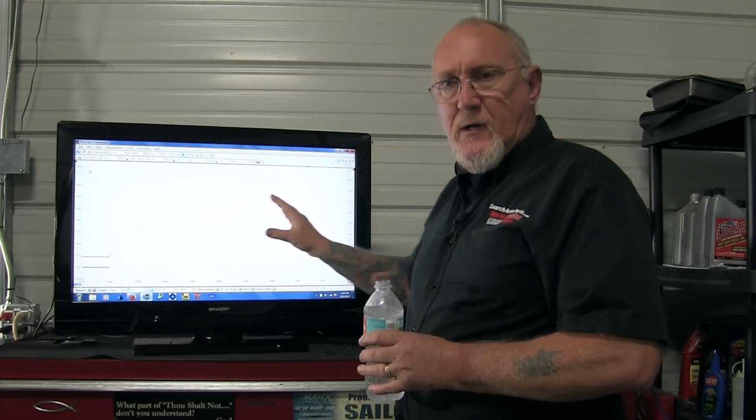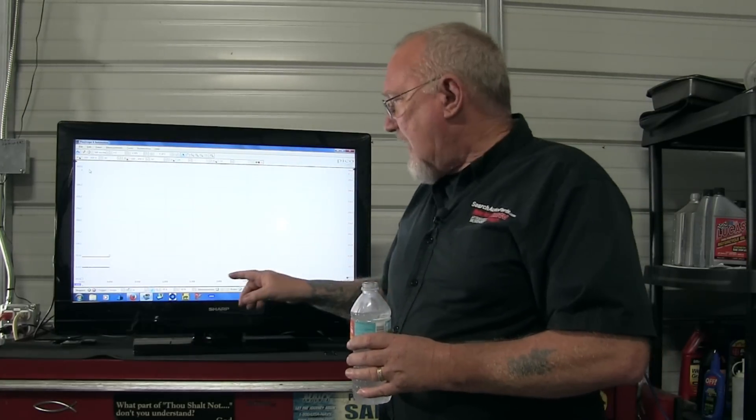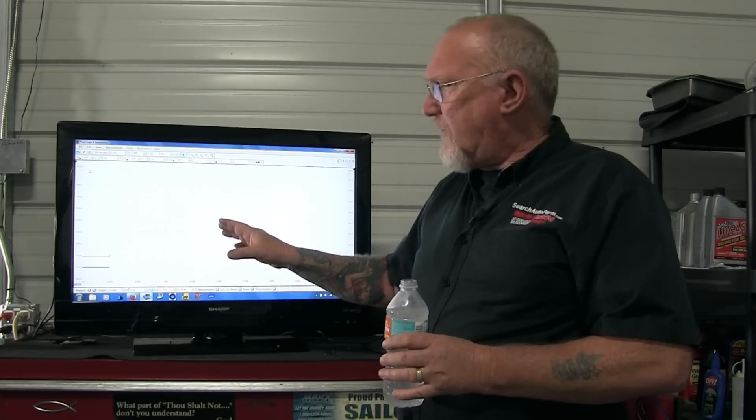It's at 70 amps on a rising slope. So that's telling the scope, don't start drawing a pattern until you see that signal go from below and up to that 70 amp threshold. And once you see that, Mr. Pico, I want you to start drawing the pattern on the screen.